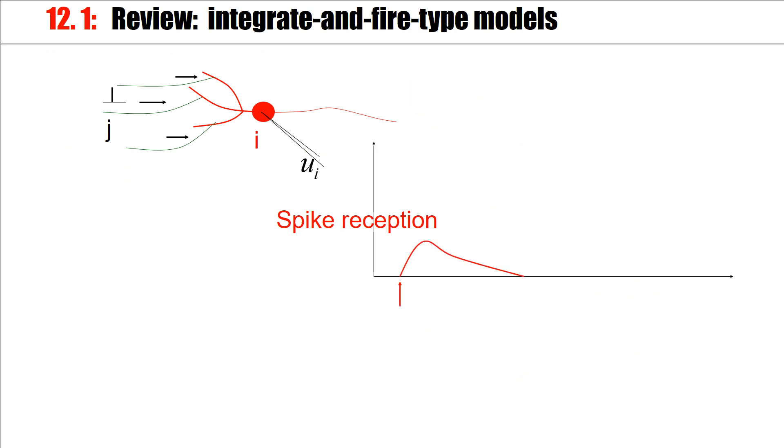As we know, a neuron responds with a membrane potential response to spike arrival. If several spikes arrive, we add up the responses until a threshold is reached. And in this case, a spike is sent out, emitted and sent to other neurons.